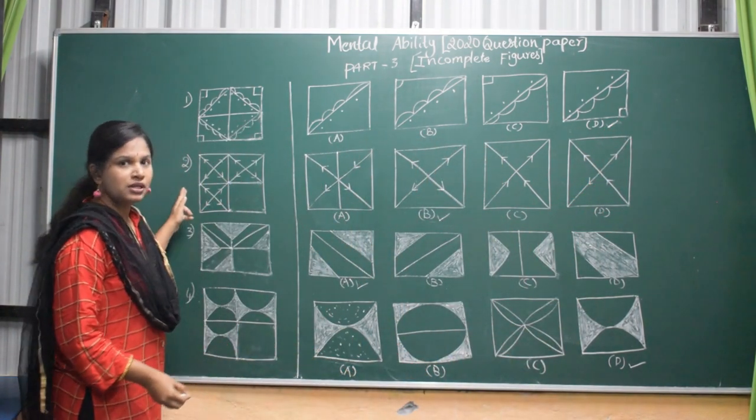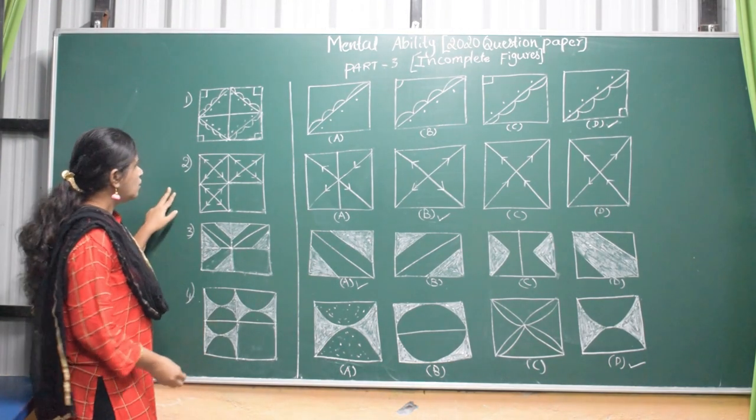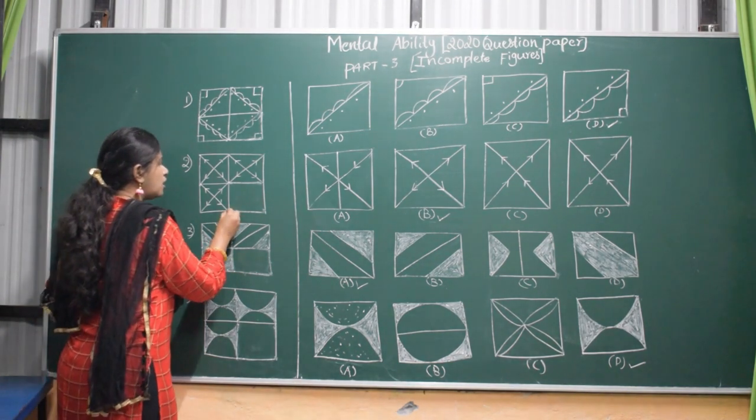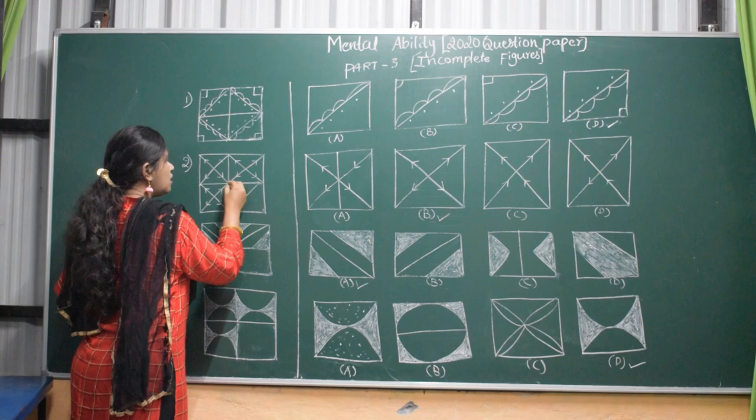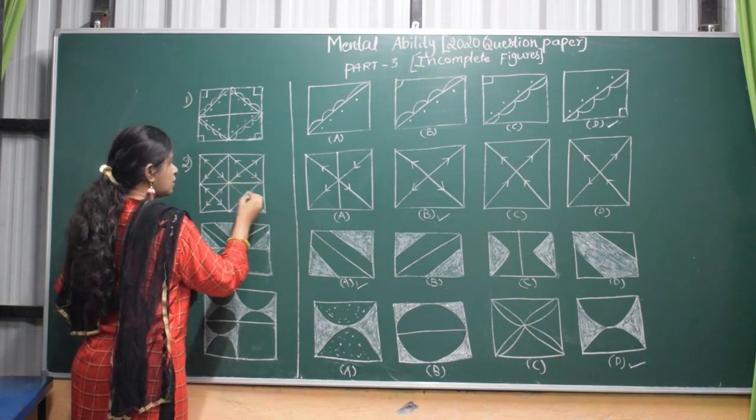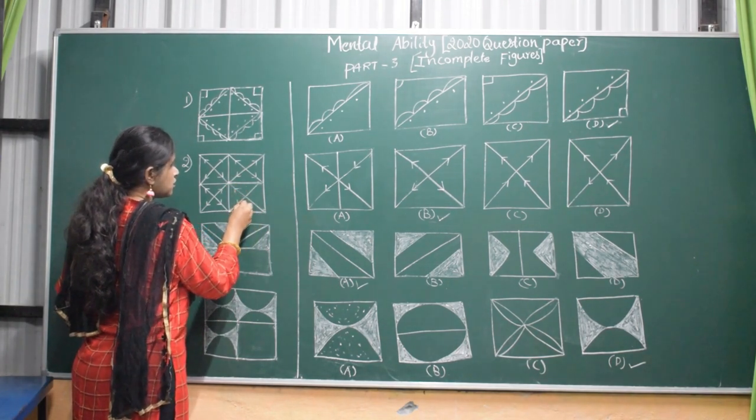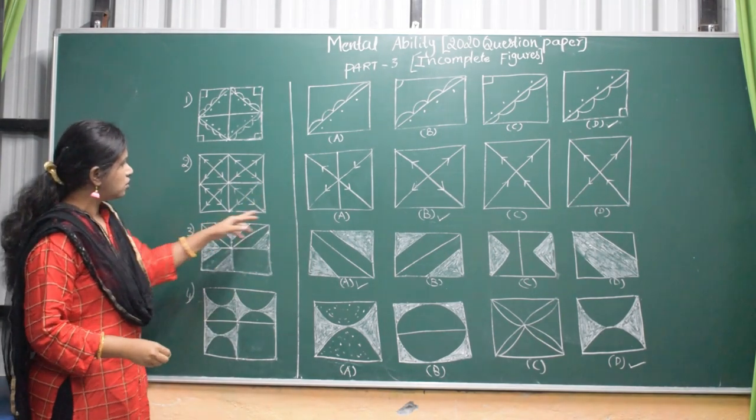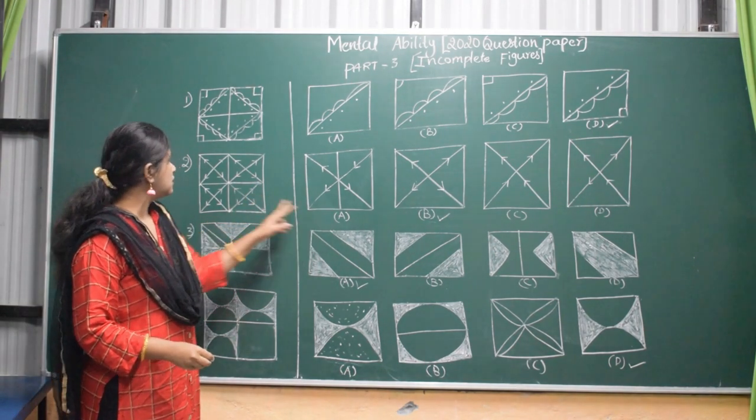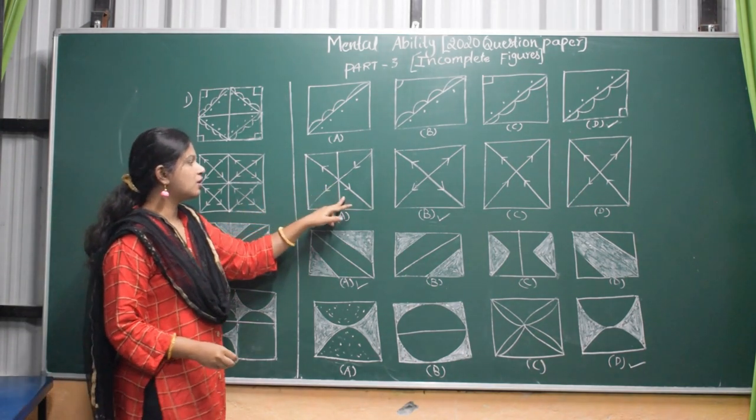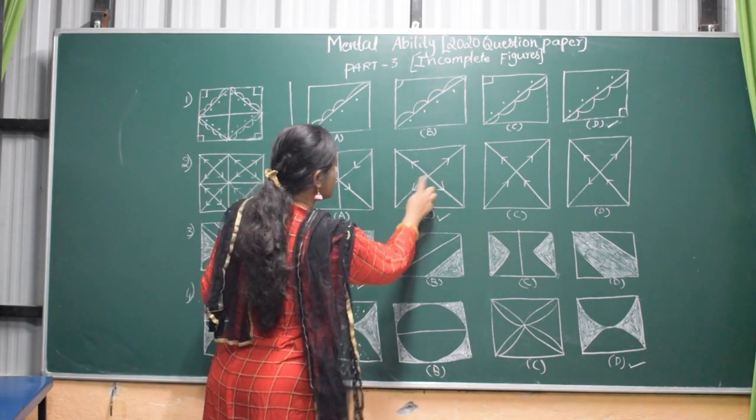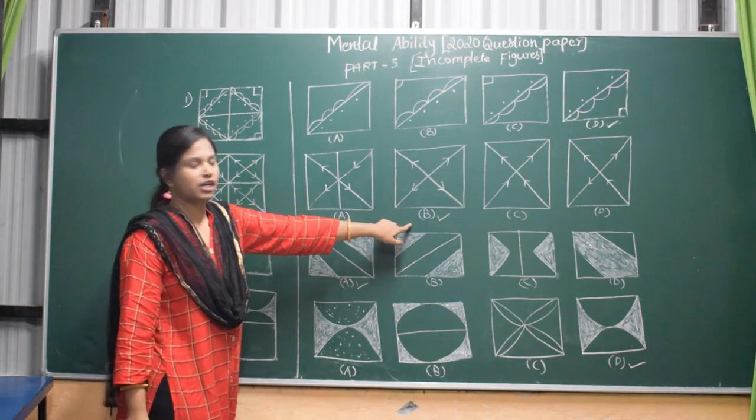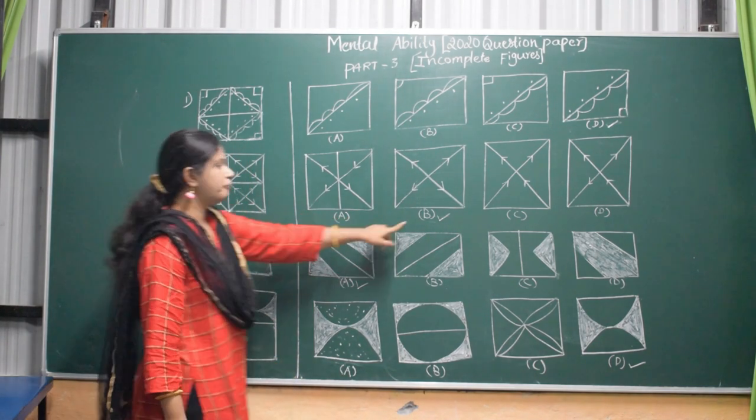Coming to 2nd question. Here also you draw and then observe the answer. Draw the arrow marks carefully. So first one, first figure, the arrow marks are not in the same direction. And coming to B, the arrow marks are in the same direction. So answer is B.